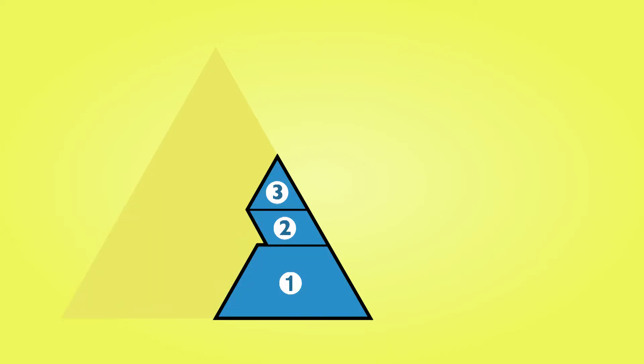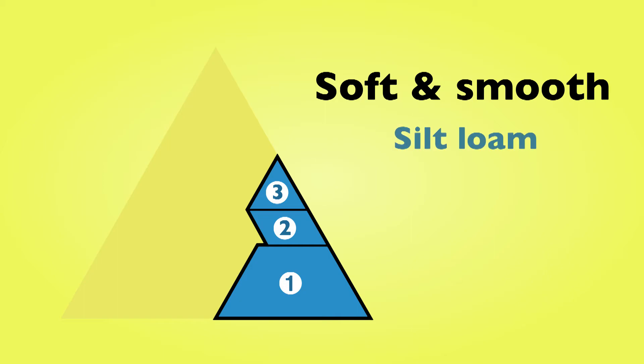So actually now you only have really nine textures that you really need to deal with. Those soils which are on the right side of the textural triangle, those are usually soft and very smooth. They feel like talcum powder actually. Those are the silts: silt loam, silty clay loam, or silty clay.